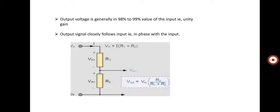The output voltage is generally 90 to 99 percent of the input value — that is unity gain. The input given to the circuit is approximately equal to V output, with only a small voltage drop. Since the output is 99 percent of the input, we call it unity gain. The output signal closely follows the input and is in phase with it. Therefore, V output equals V input multiplied by R2 divided by R1 plus R2.